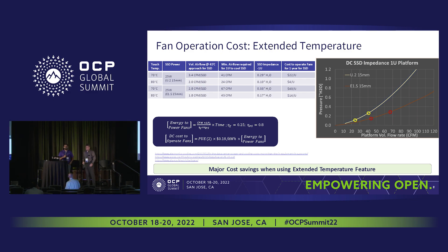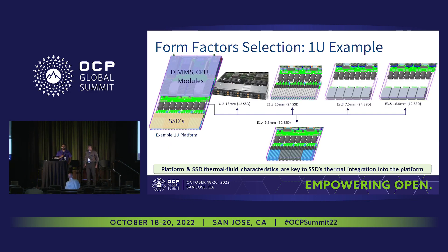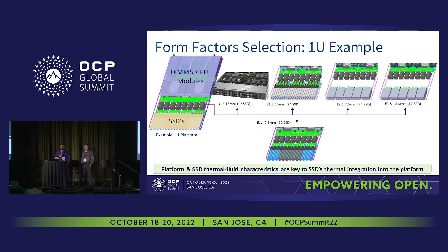This is also a case study on form factor selection. We have so many form factors — U.2 15 millimeter, and 11 different EDSFF form factors. E1S comes in four different flavors, E3S comes in many flavors. We took an example of one new platform: you can fit 12 U.2 SSDs or 24 E1S SSDs. The question is how do you pick which form factor should go into what platform?